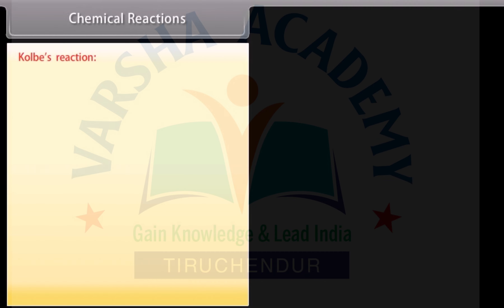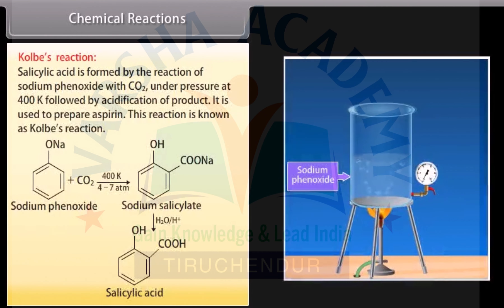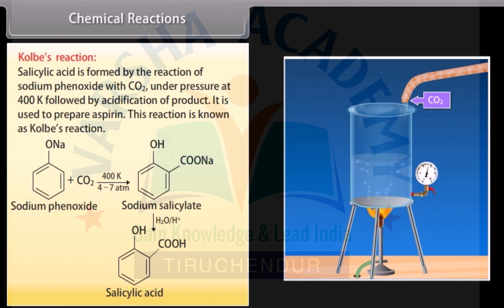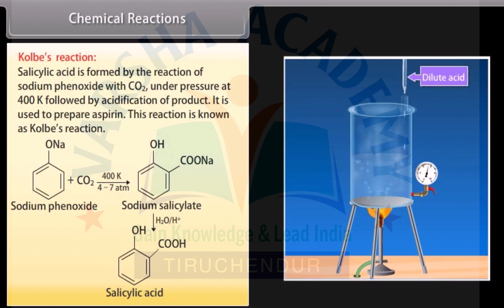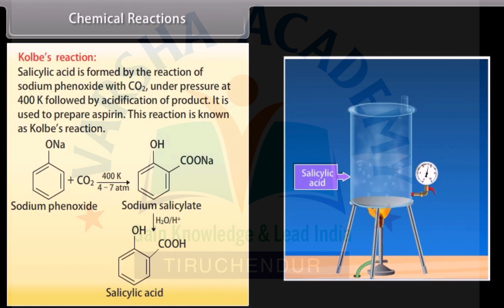Kolbe's reaction: salicylic acid is formed by the reaction of sodium phenoxide with carbon dioxide under pressure at 400 Kelvin, followed by acidification of the product. It is used to prepare aspirin. This reaction is known as Kolbe's reaction.